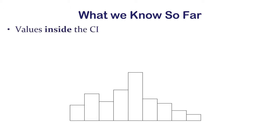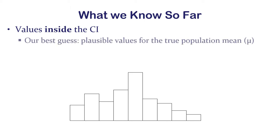More specifically, if you want to talk about the meaning of the confidence interval, we can think about all the values inside — between the lower and upper limits — and those outside. The values inside the confidence interval are plausible. When we say we're 95% confident that the true population mean lies between such and such, we're saying based on our data it's 95% plausible that the true population mean might lie between these values.